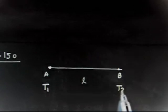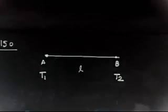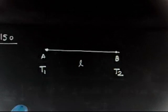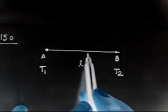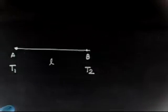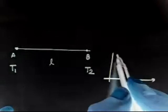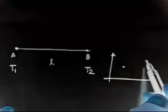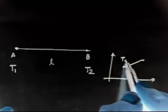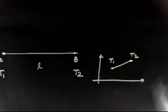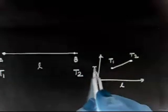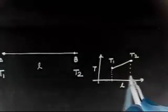The distance between points A and B is L. The air temperature varies linearly from T1 at point A to T2 at point B. Linear variation means if the temperature is T1 at A, we can find the temperature at any intermediate point, and the temperature-distance graph is a straight line.